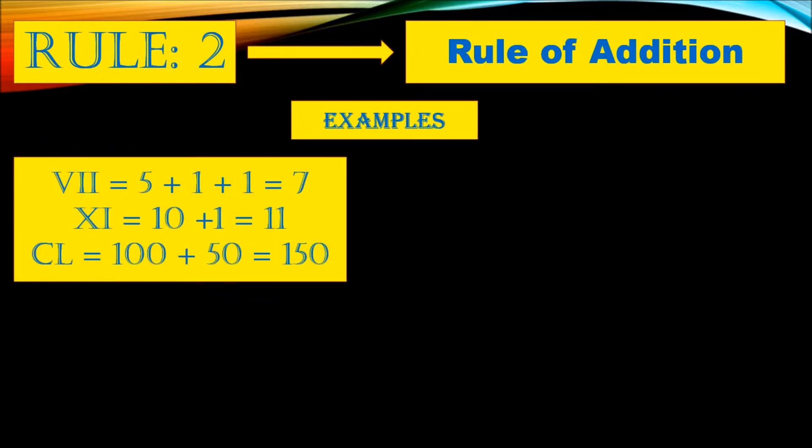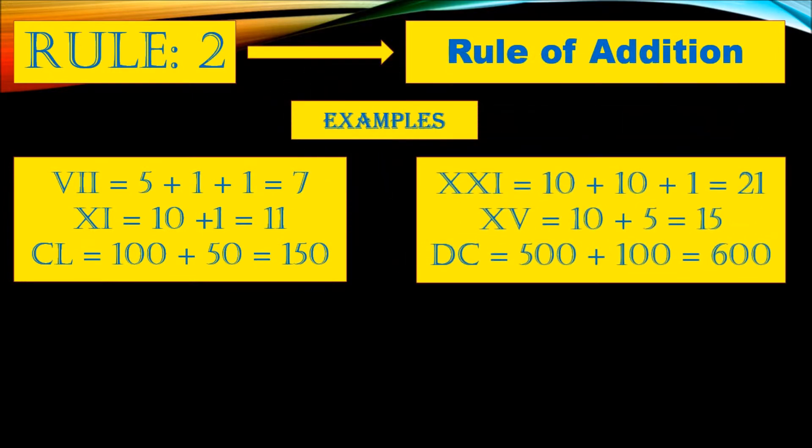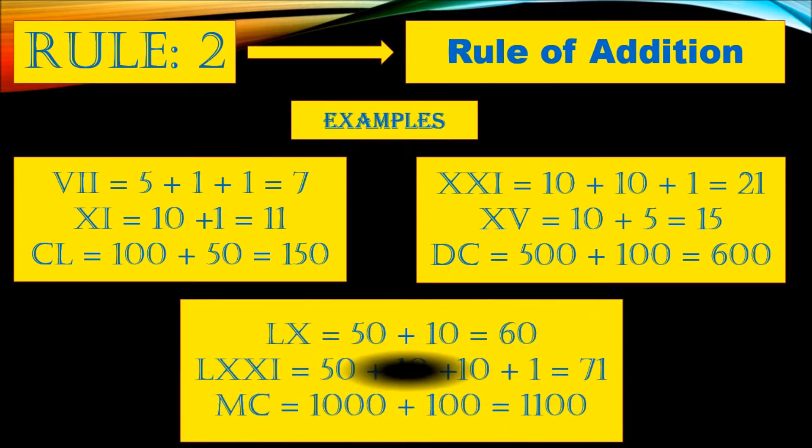VII, that is five plus one plus one equals seven. XI, that is ten plus one equals eleven. CL, that is one hundred plus fifty equals one hundred fifty. Same way, the others. These are some examples of addition.